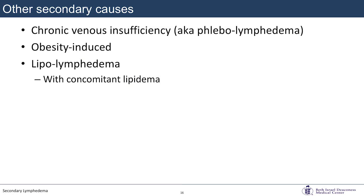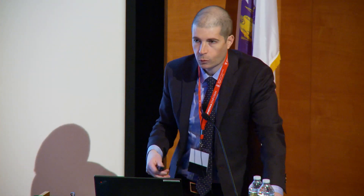Other secondary causes include chronic venous insufficiency — or phlebolymphedema — obesity-induced lymphedema, and lipolymphedema, which is lymphedema associated with lipedema. Phlebolymphedema is the overwhelming of the lymphatic system — not a dysfunctional lymphatic per se, but one that can't keep up with the extra fluid from venous obstruction, compression, or valve incompetence. The exam looks like a combination of venous and lymphatic disease: on one side you see ulcerations but also fullness of the toes more typical of lymphatic dysfunction; on the other, hyperpigmentation common with venous disease but significant distal edema consistent with lymphedema.